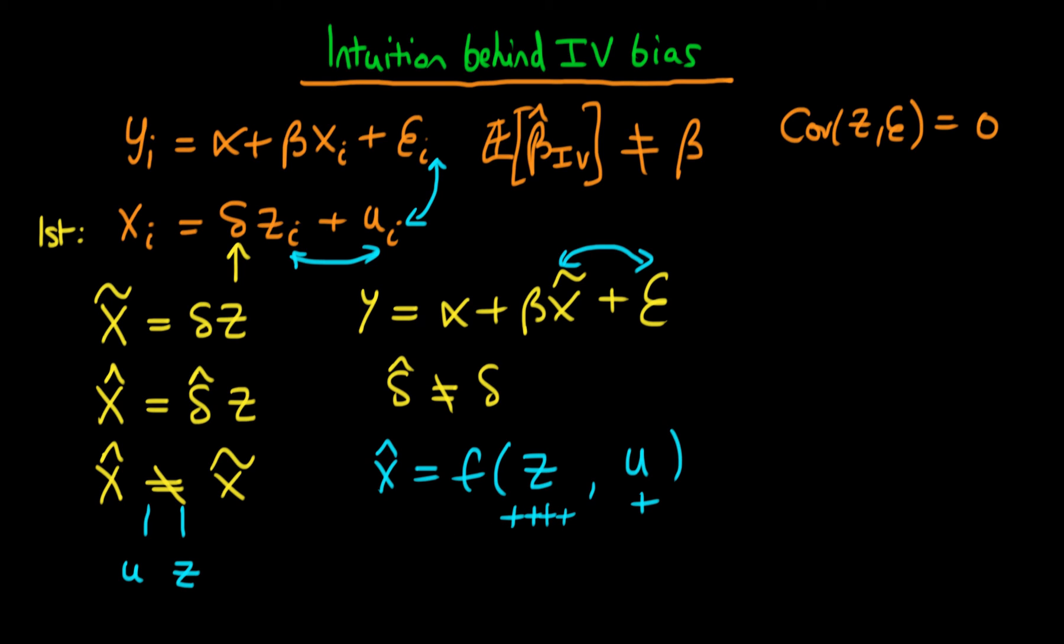So then when we run our second stage regression, which is y is equal to alpha plus beta x hat plus epsilon, because there is this finite sample dependence on u, there is some covariance between x hat and epsilon because we know from our least squares problem to begin with that the covariance of epsilon and u doesn't equal zero.